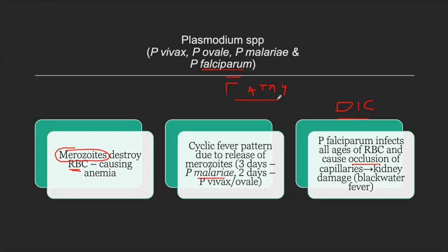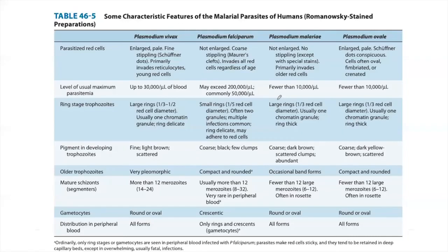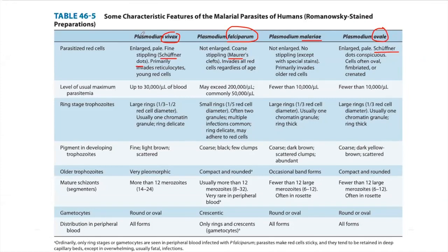Reviewing characteristic features of the malarial parasites: the stippling dots to remember are Schüffner's dots for vivax, Maurer's dots for falciparum, and James dots or Schüffner's dots for ovale. For Plasmodium malariae, the correct answer is Ziemann's dots. As to parasitemia, falciparum has the highest level.